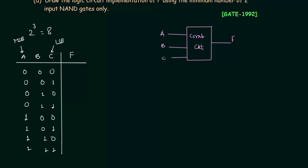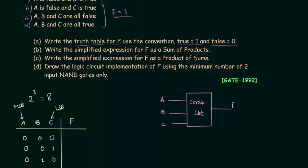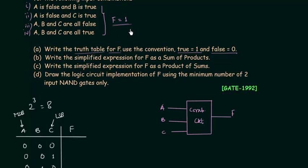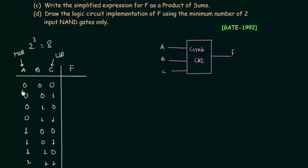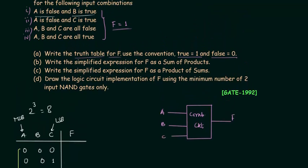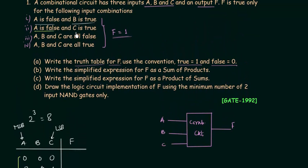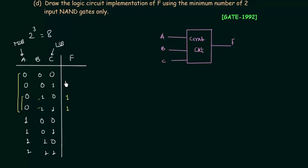Now we will see the first condition. The output F is 1 when A is false and B is true. In the initial four combinations A is false, and among those, B is true for two combinations, so output F is 1 for those two. From the second condition, A is false and C is true, which will also yield F equal to 1.